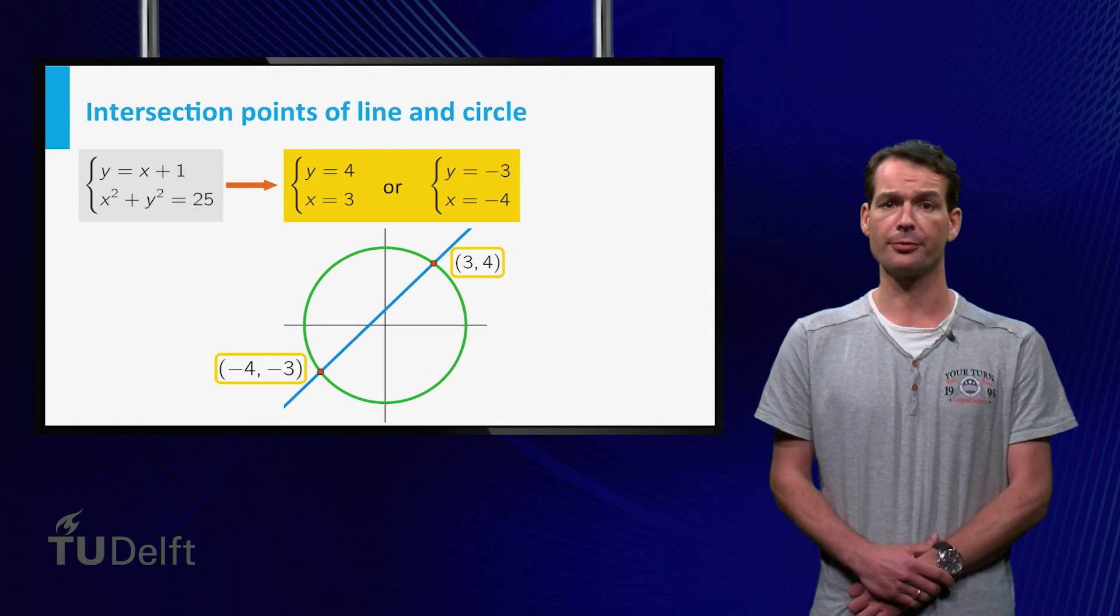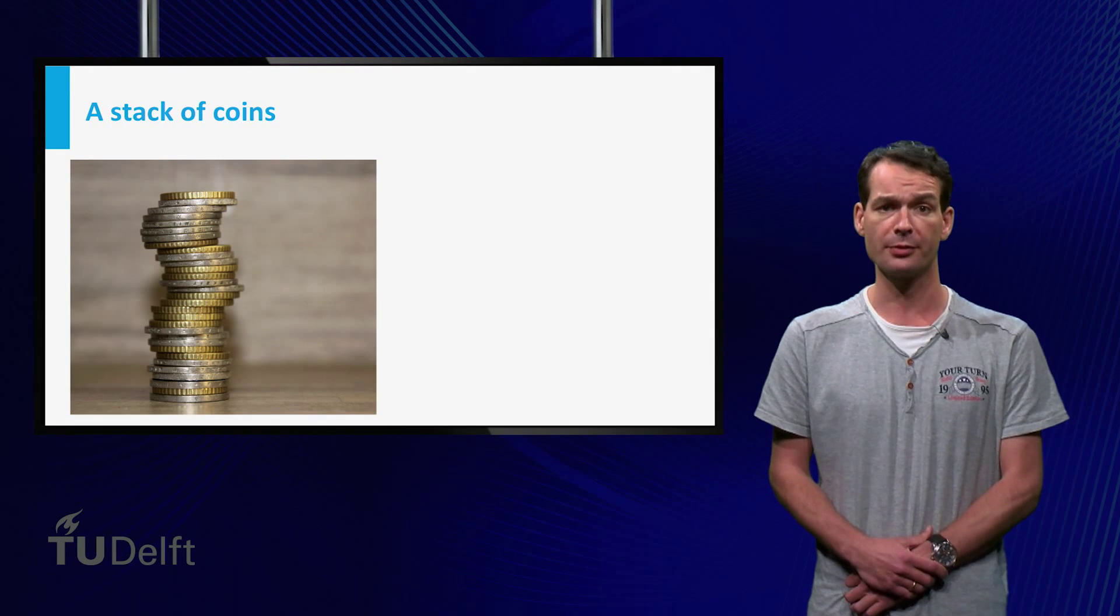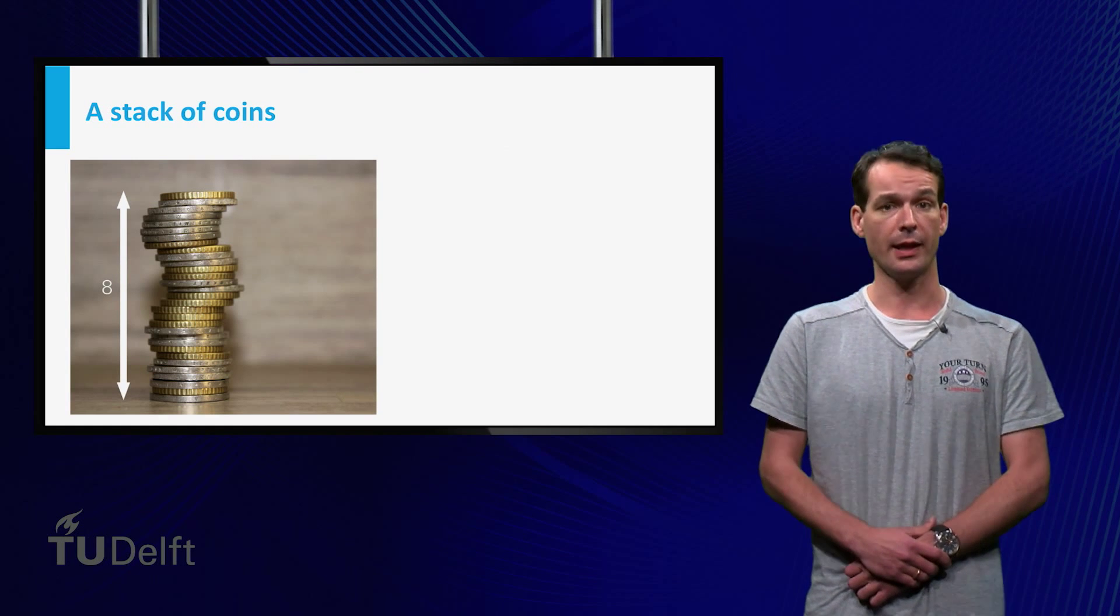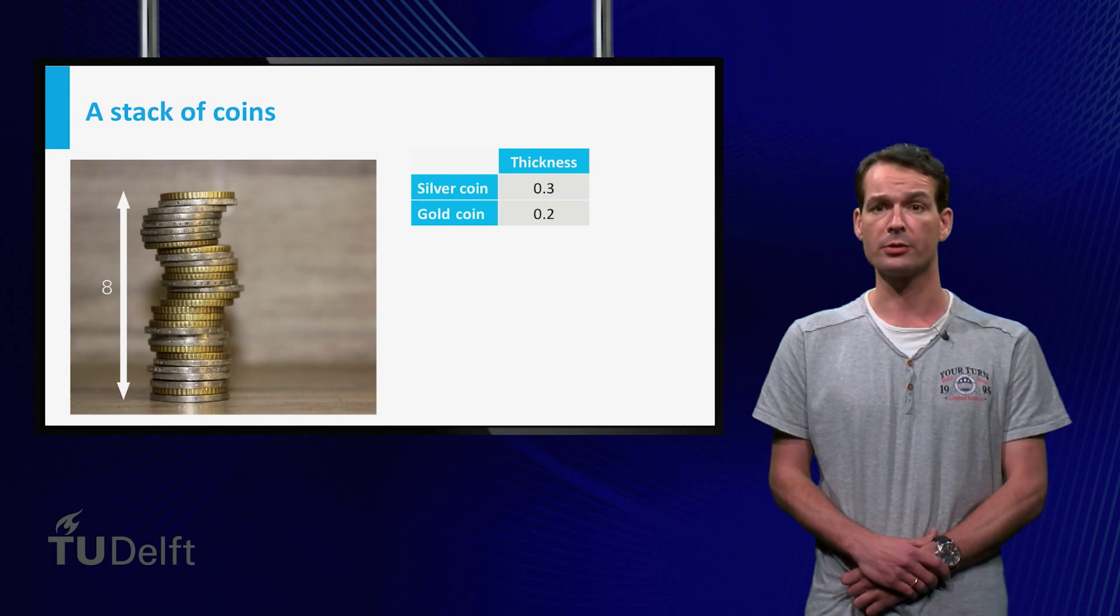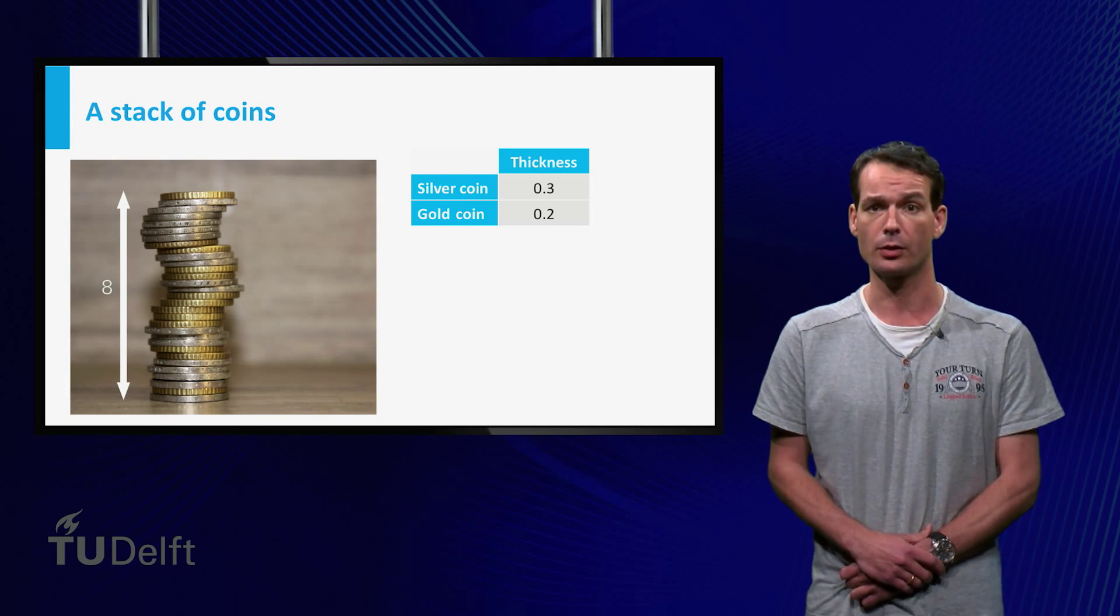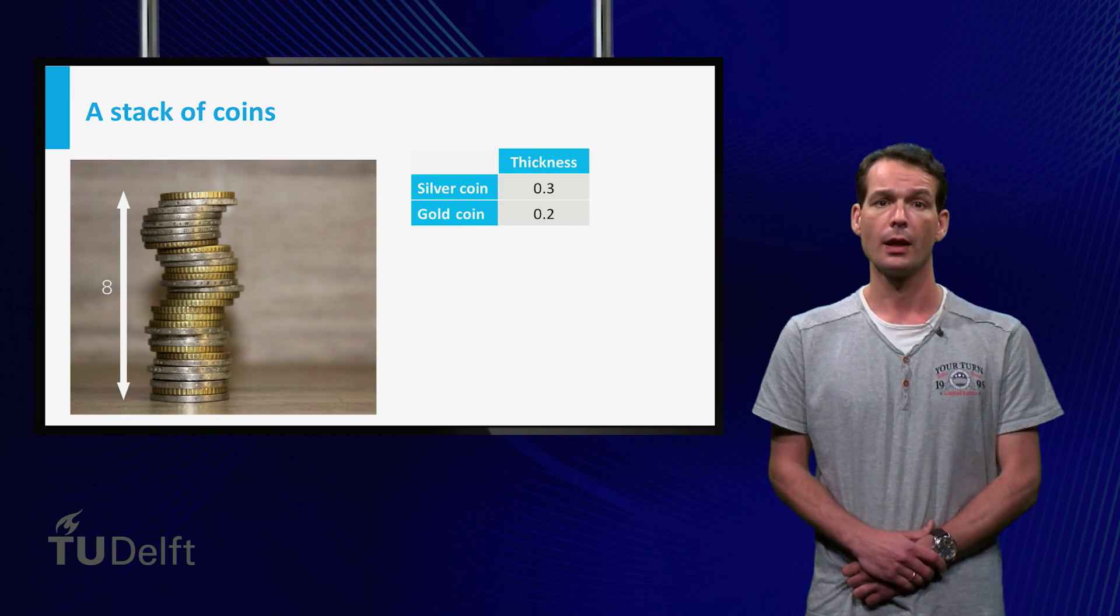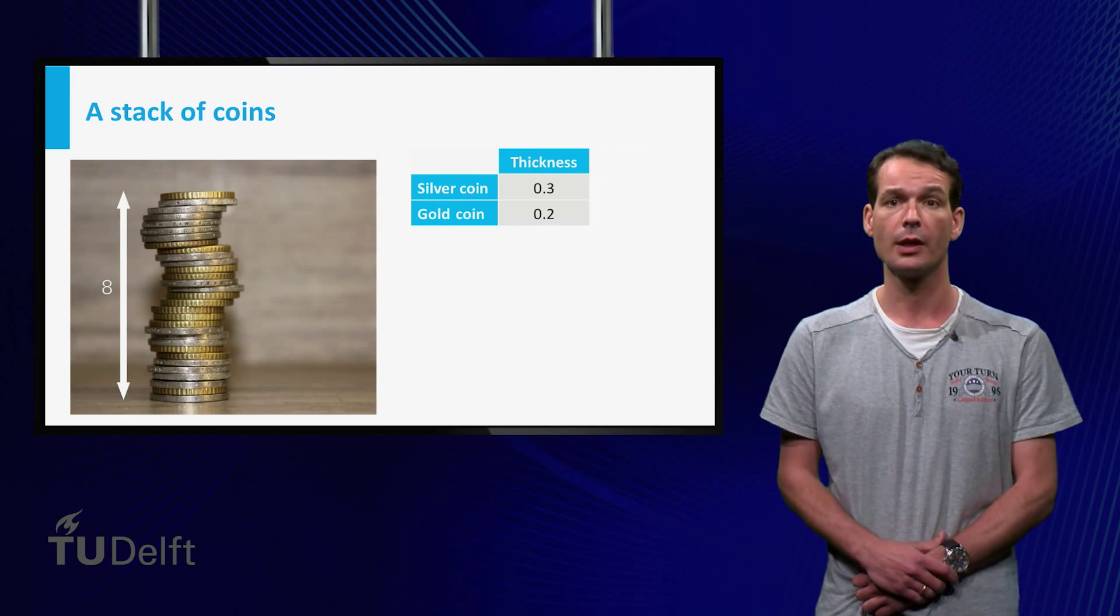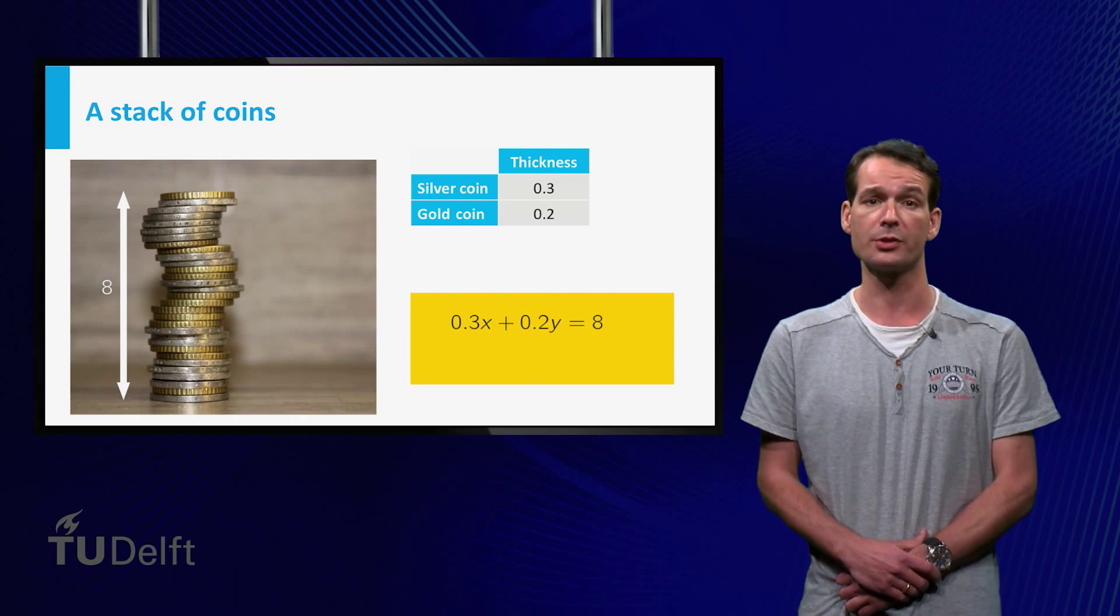Let's now consider the following situation. We have a stack of coins consisting of two different types of coins, say silver and gold. The height of the stack is 8 centimeters. We know that a silver coin has a thickness of 0.3 centimeters and a gold coin has a thickness of 0.2 centimeters. If x is the number of silver coins and y is the number of gold coins, then we have the equation 0.3 times x plus 0.2 times y equals 8.